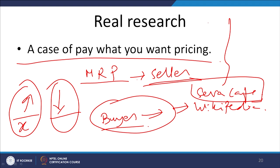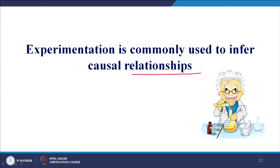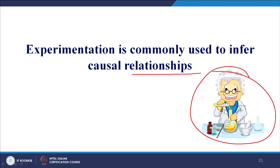Some companies have done pay-what-you-want and are doing it well. We are experimenting with different product types — commodities, luxury goods, handmade goods — to see how people react. We have published results in journals and interestingly found that pay-what-you-want can be beneficial for the seller. So experimentation is commonly used to infer causal relationships — just like a scientist mixes chemicals to see the result, in the business arena we test how variables have an effect.